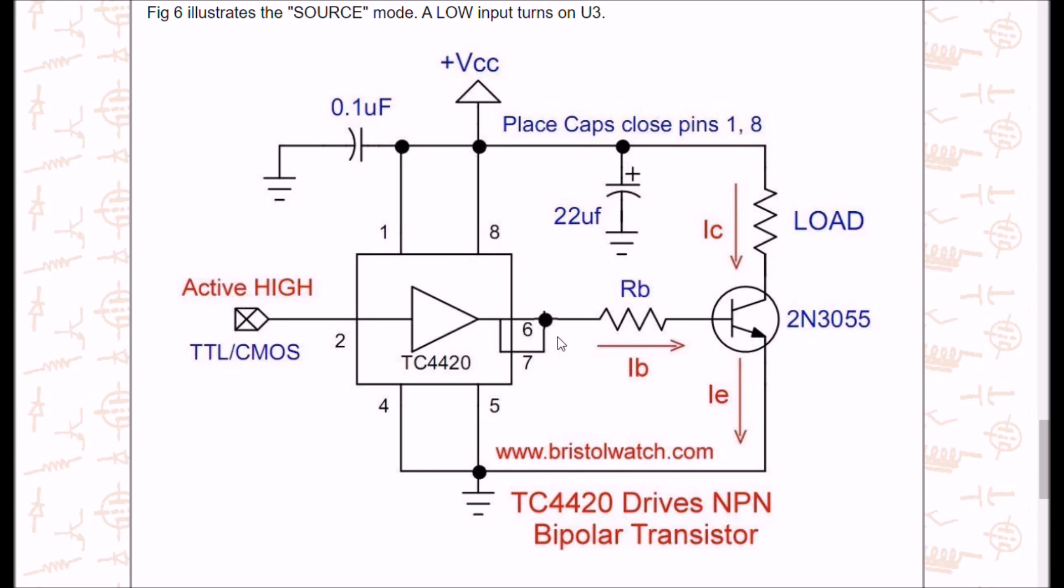You have to calculate your IB with the appropriate base resistor. And this forms a low side switch for the load up here, as shown.